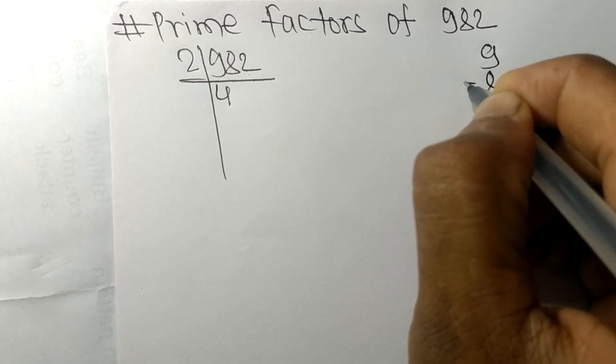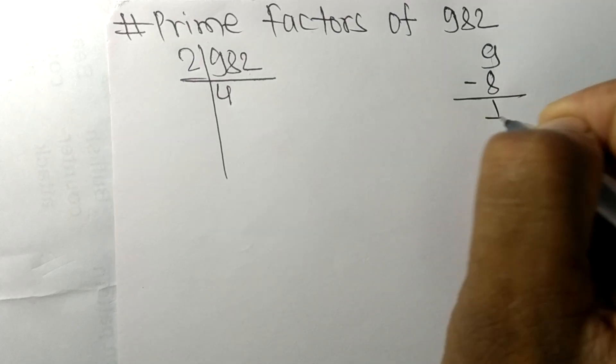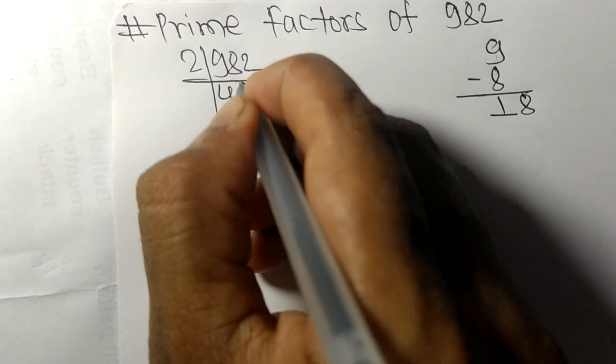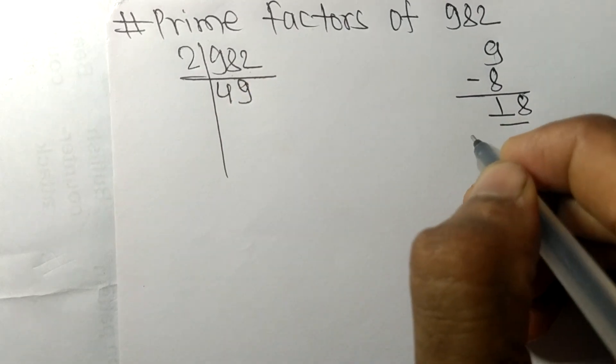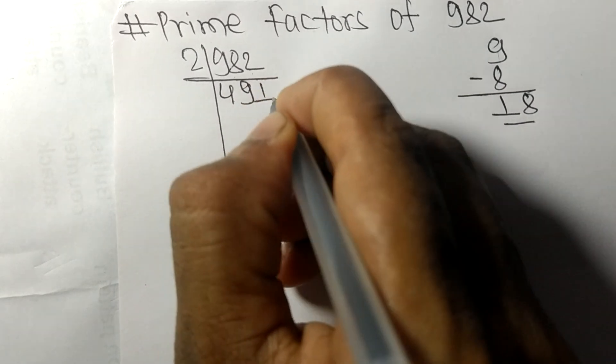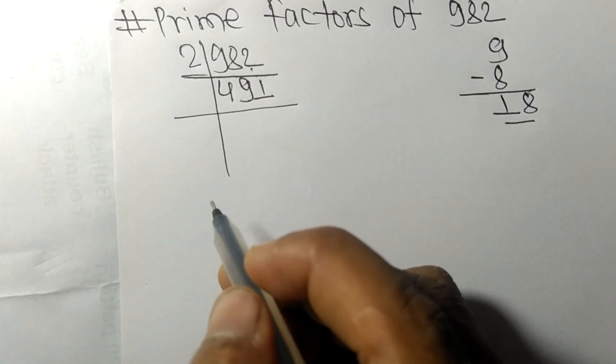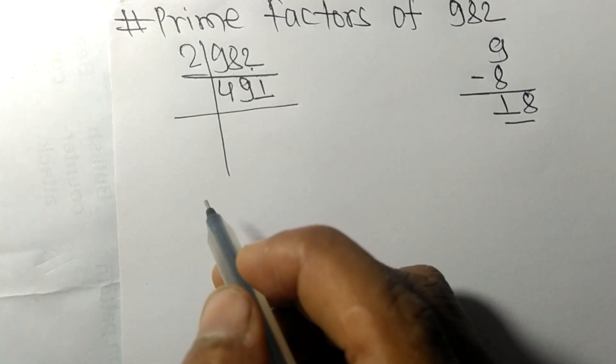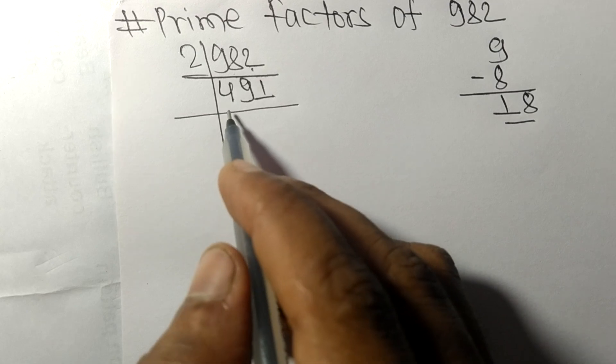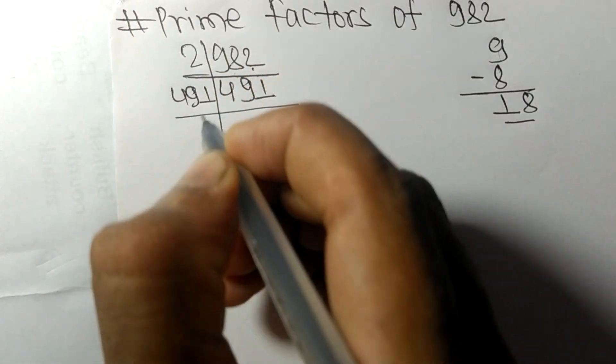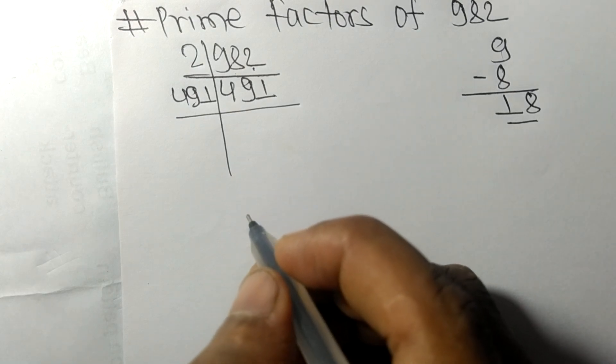On subtracting we get 1. Bring down the 8 to make 18. 2 times 9 means 18, and 2 times 1 means 2. Now we got 491, which is a prime number. It is exactly divisible by 491 only.